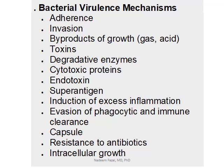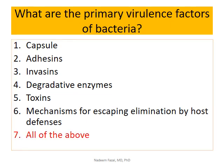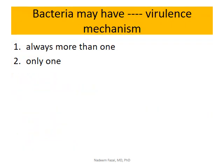Whenever you look at the pathogenesis of a particular bacteria and are asked about primary virulence factors, all of these should come to mind immediately. Some questions may ask whether bacteria always have more than one virulence mechanism or only one. When a question says 'only one virulence mechanism,' it suggests the one dominant one — not that the others are absent, but this is the major one causing the problem.